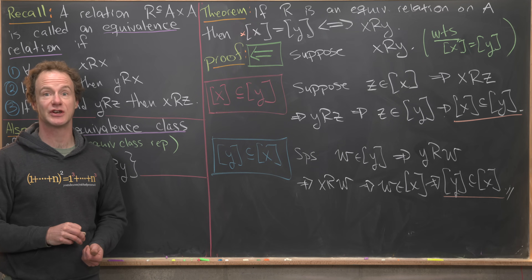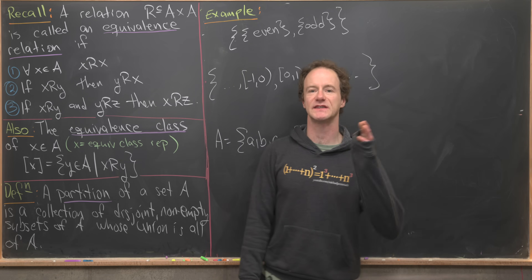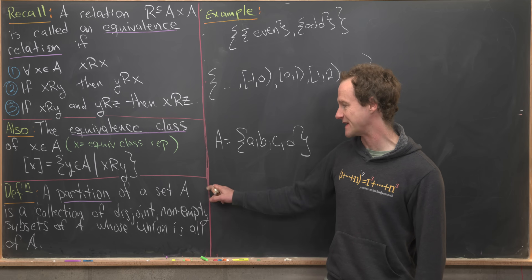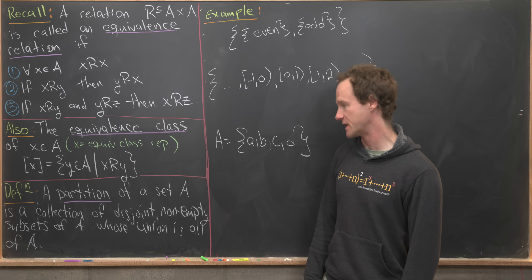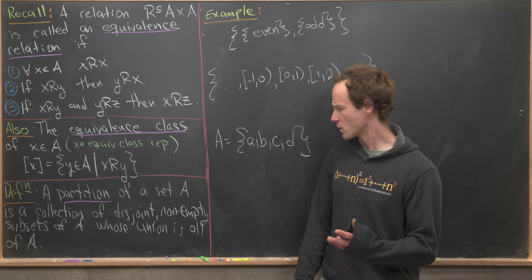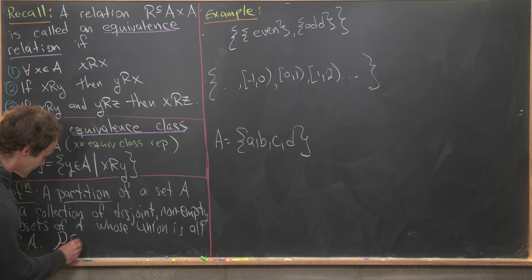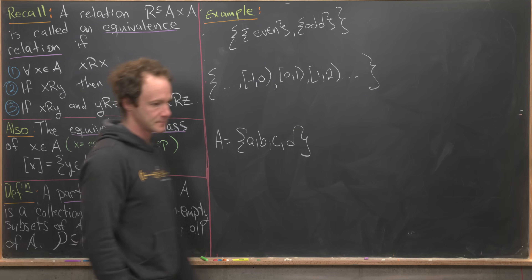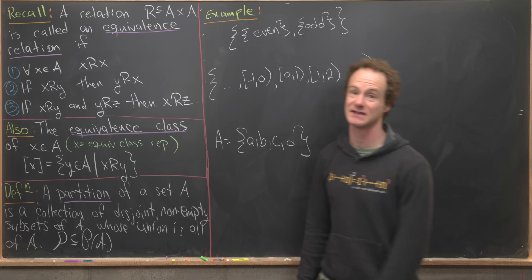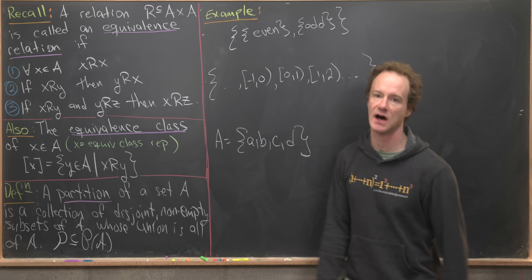Now let's look at the notion of a partition of a set, which as we'll see is in some ways equivalent to the notion of an equivalence relation. A partition of a set A is a collection of disjoint non-empty subsets of A whose union is all of A. The partition, sometimes written with script P, is a subset of the power set of A — but not all of it, since the power set contains the empty set which isn't allowed, and also contains overlapping sets which are also not allowed.